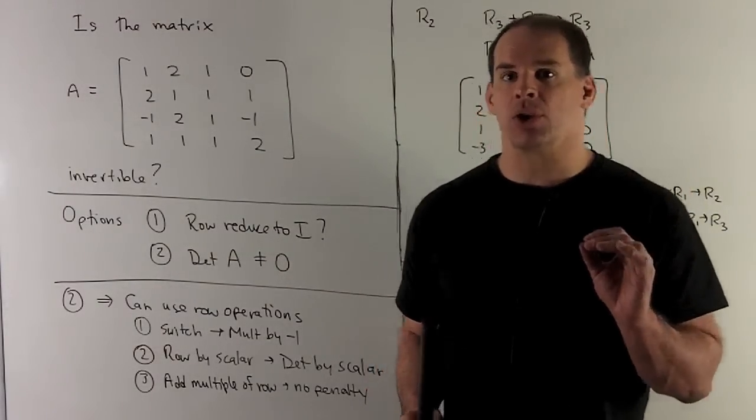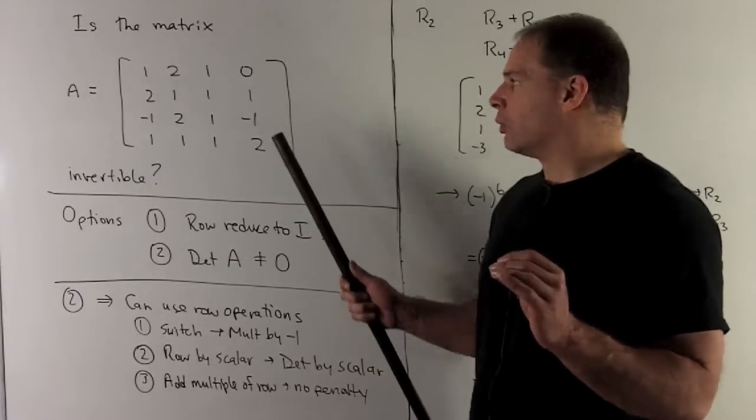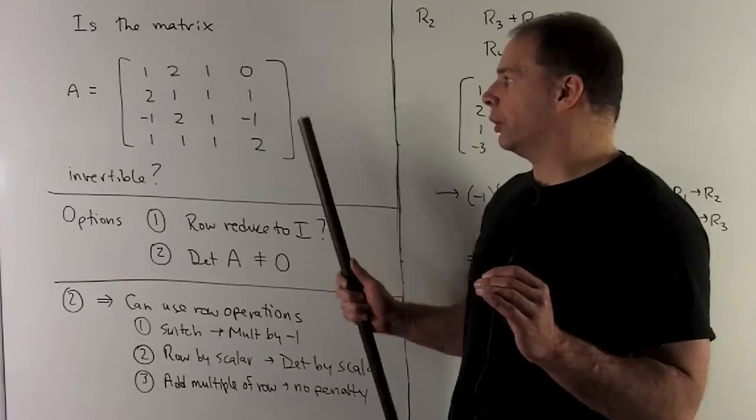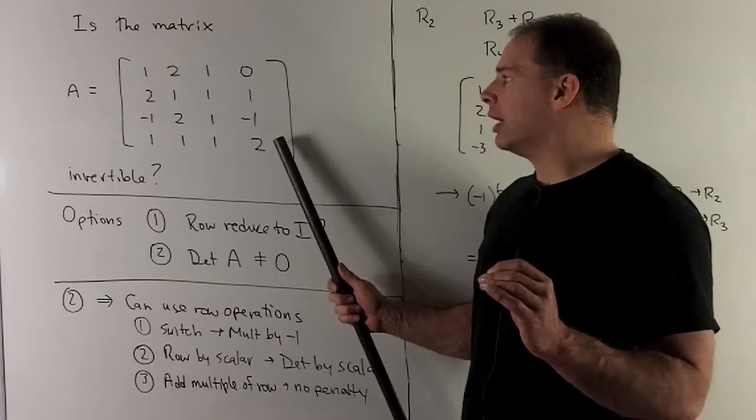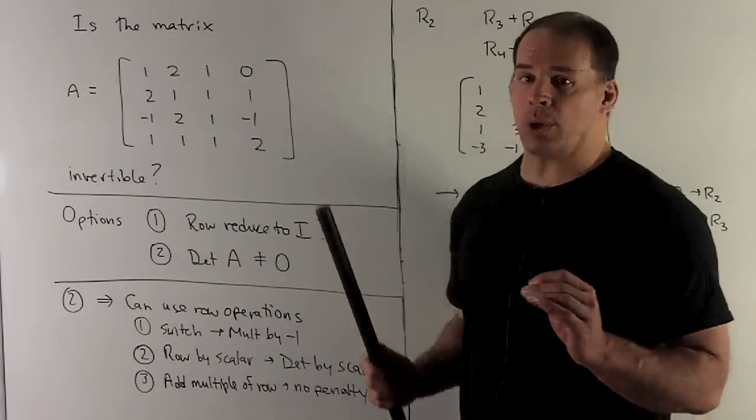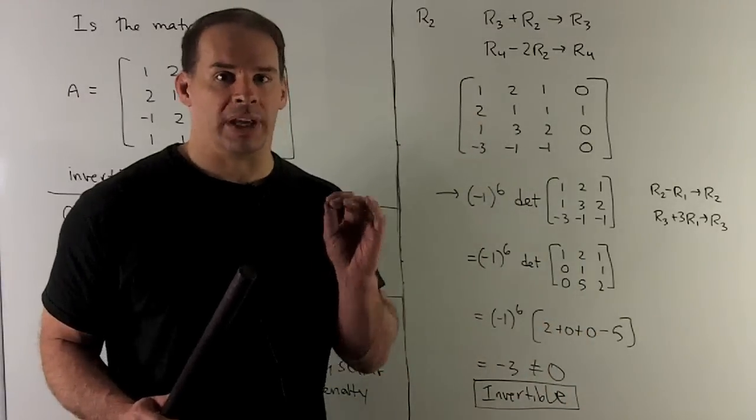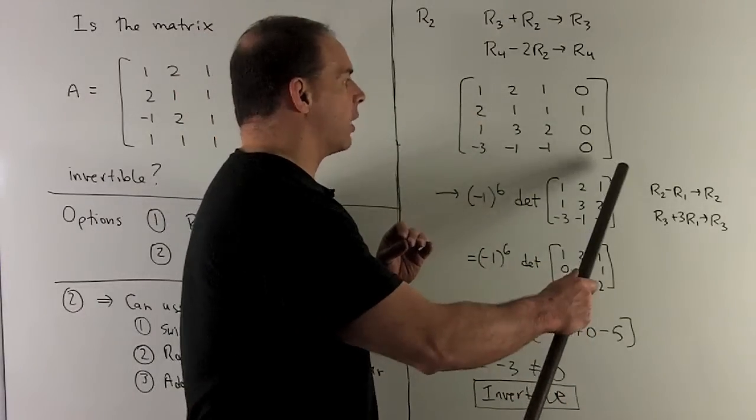To get these to zeros, what do I need to do? We're going to take row 3, add row 2, and then we're going to take row 4, subtract off twice row 2. When we do that, we're going to get this matrix as follows.